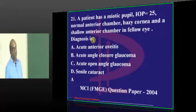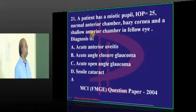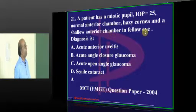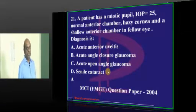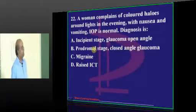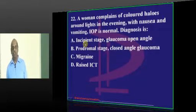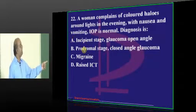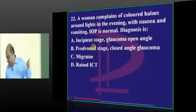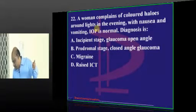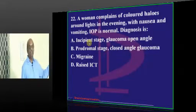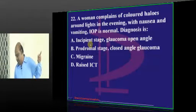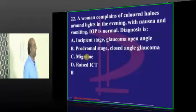In the fellow eye, hazy cornea — these are the important clues to differentiate uveitis. Now question number 22 — the answer is prodromal stage B. Guntur answered correctly; Visag also says B, which is correct.